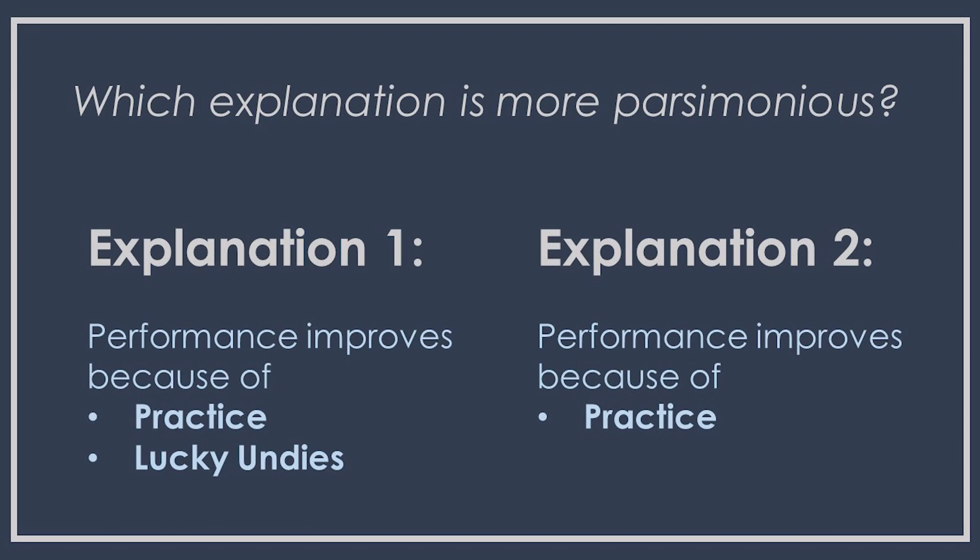Here's the thing: we already know from countless other situations that practice seems to make a difference in performance. If we know there's practice and we see a change in performance, we don't need lucky undies as part of that explanation. So if I want to be skeptical and minimize the number of false beliefs I have, I want to stick with explanation two. Otherwise, I'm going to superstitiously be believing in these lucky undies — and you don't make many friends while wearing lucky undies, so there is an opportunity cost associated with that.